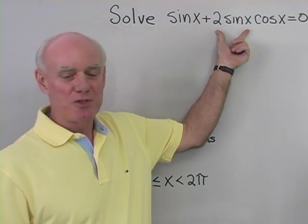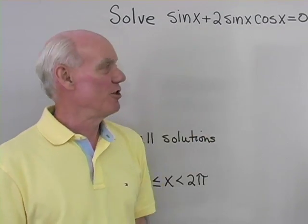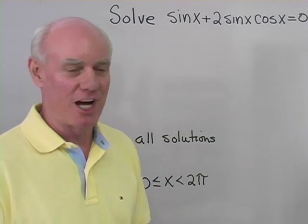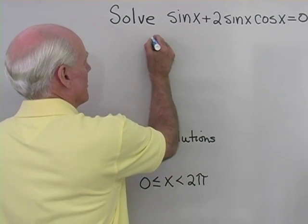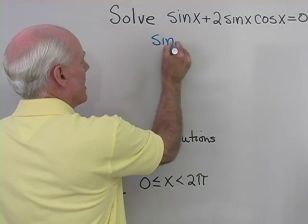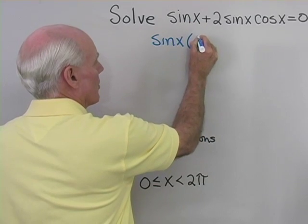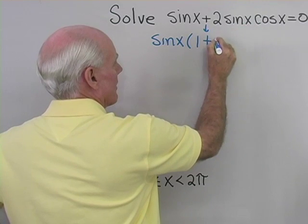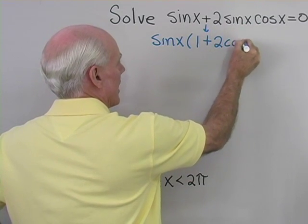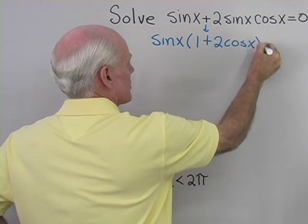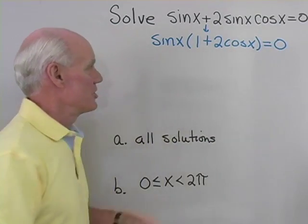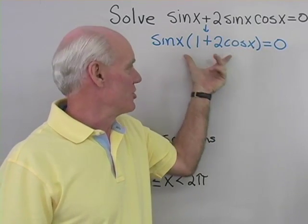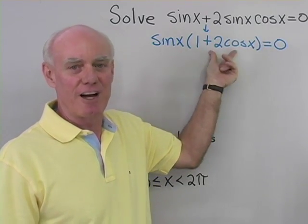Here I have sine x plus 2 sine x cosine x equals 0. I'm going to solve this equation by factoring. I'll factor out the greatest common factor, which is sine x. What's left in this term is a 1, plus when I factor sine x from this term, what's left is 2 cosine x — just like solving a quadratic equation in algebra. So I have the product of sine x and this factor equal to 0, and I'll set each factor to 0.